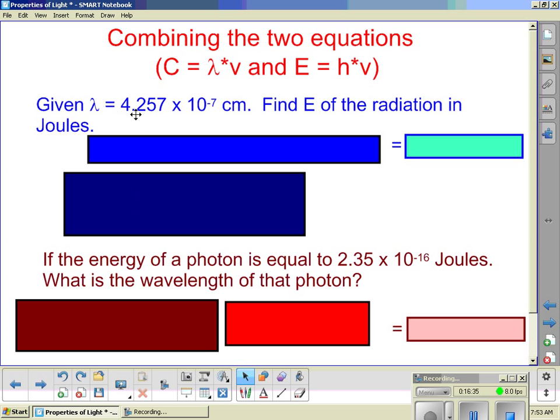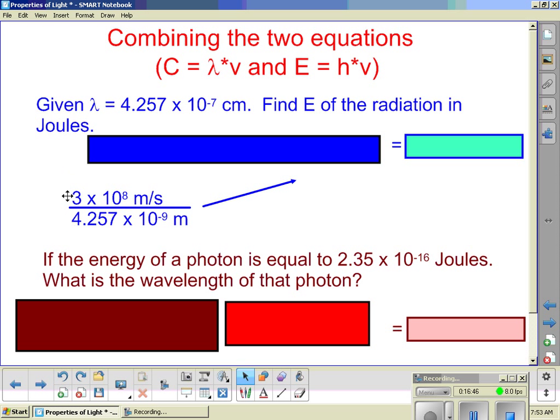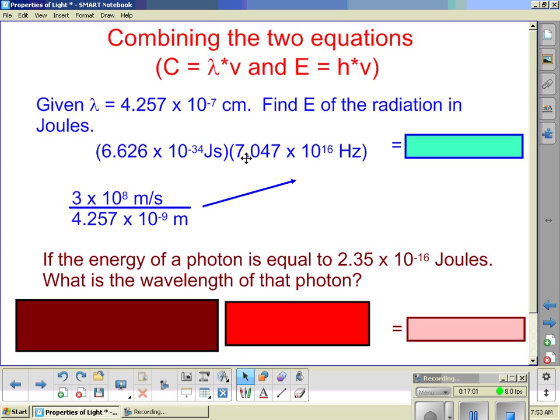So we're given a wavelength, right here, 4.257 times 10 to the negative 7th centimeters. Remember, this must be in meters. You're going to find the energy. So, first off, we start with this. Speed of light divided by our wavelength. We do our division, and we can plug the answer to this in, the frequency, right into here. We're going to multiply it times Planck's constant, Planck's constant times the frequency we just found by dividing here. We multiply these together, and we get our answer. 4.67 times 10 to the negative 17th joules is our energy.